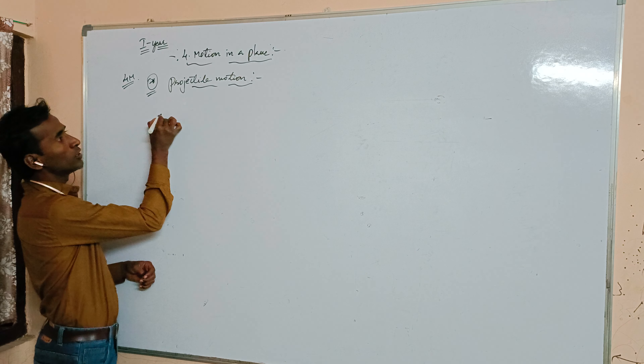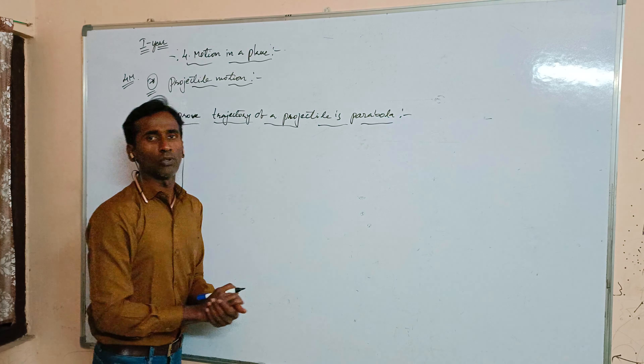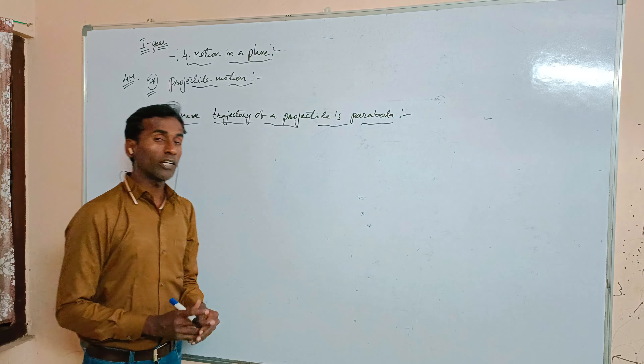Now we have to prove that the trajectory of a projectile is a parabola. So in order to prove that the trajectory of a projectile is a parabola, first of all we need to set up our problem.